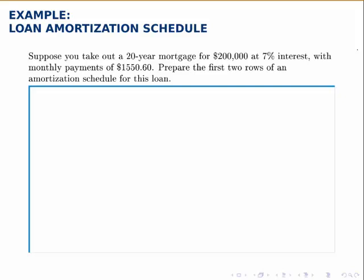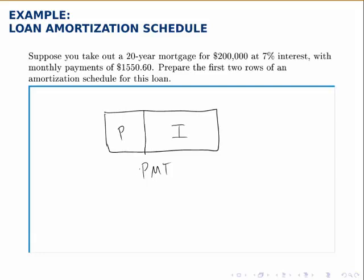This example introduces what we call an amortization table. An amortization table is a schedule that lays out the payments in a mortgage, and for each payment it splits that payment into the amount that goes toward paying off the loan and the amount that goes toward paying off interest. At the beginning of the loan, a smaller amount goes toward paying off the principal and the majority goes toward interest. But as time goes on, more and more of the payment goes toward principal as less and less goes toward interest.